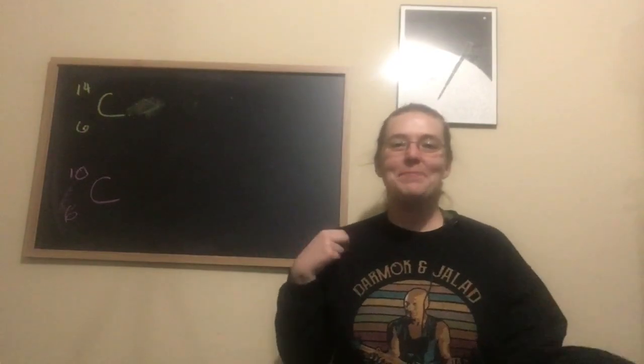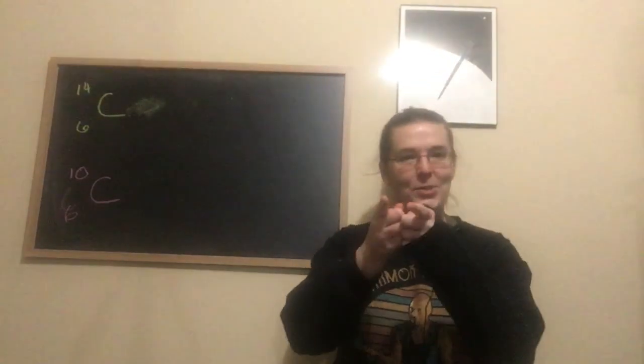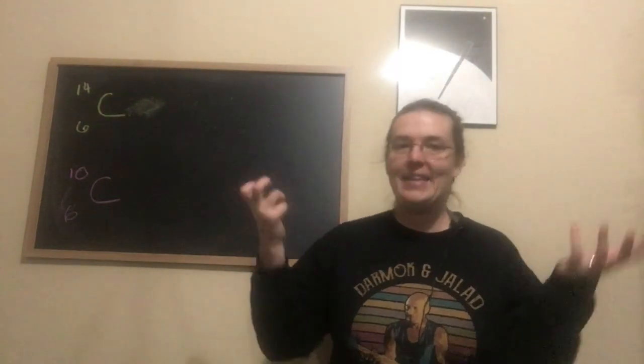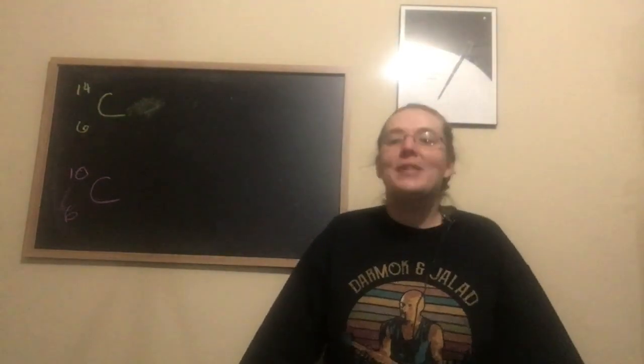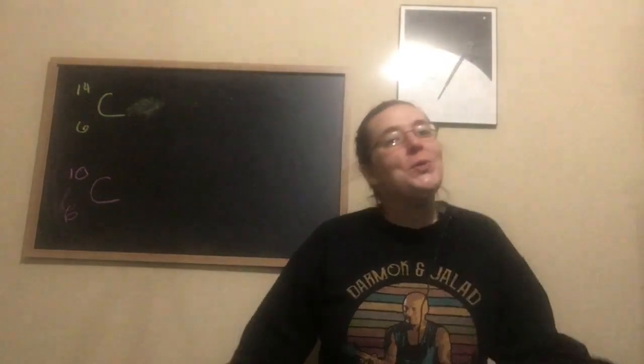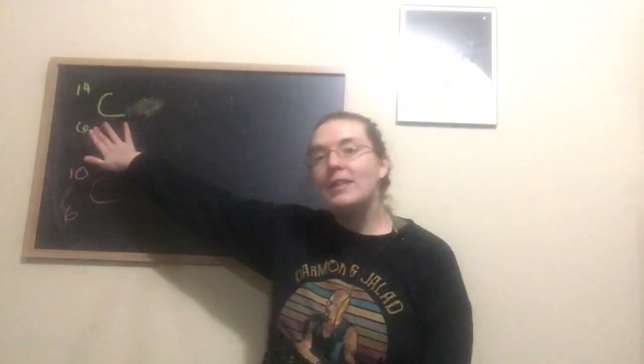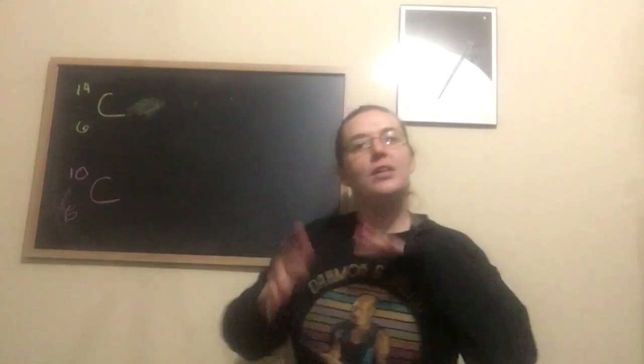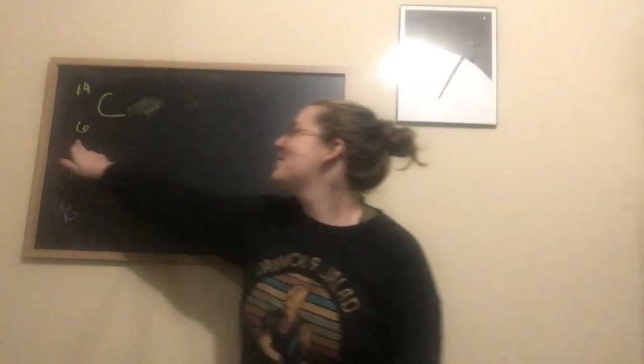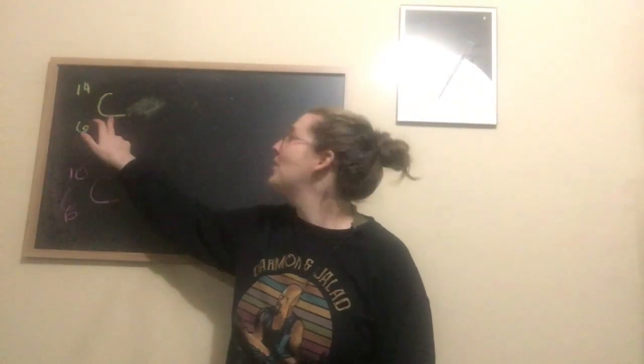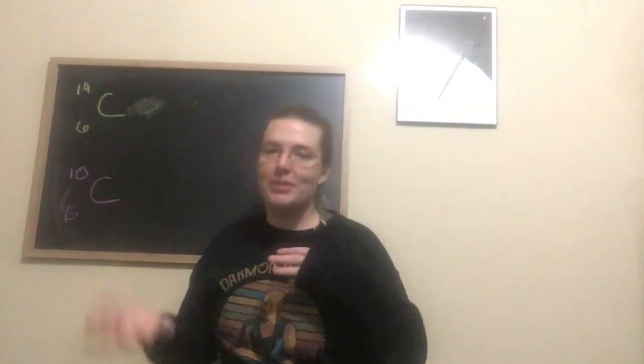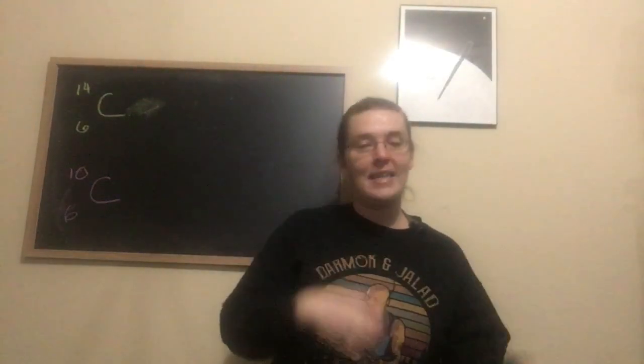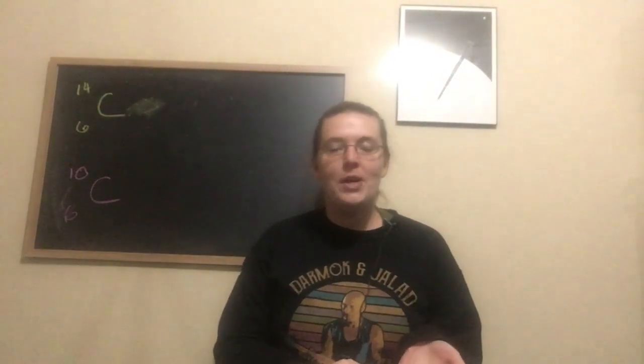Okay, so how do we get beta plus and beta minus particles? Great question. That's going to be through either beta plus or beta minus decay. This is a type of spontaneous nuclear reaction. I'm just going to give two examples. So carbon 14—and this is a nuclear science way of writing isotopes out. So 6 is the number of protons, C for carbon, 14 the total number of protons plus neutrons.